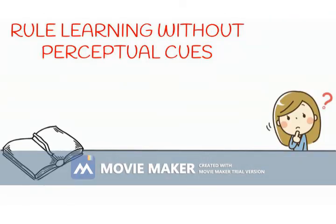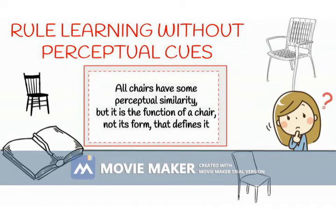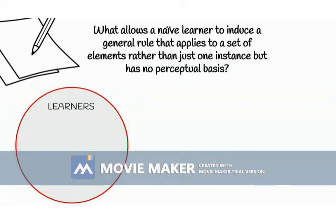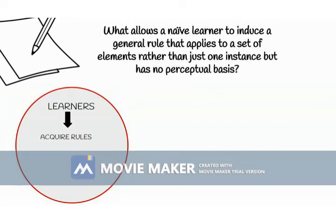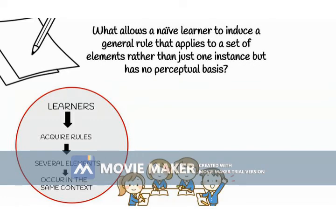Although perceptual cues can serve as powerful constraints on statistical learning, perceptual salience is not how most rules are defined in the natural environment. For example, all chairs have some perceptual similarity, but it is the function of the chair, not its form, that defines it. What allows a naive learner to induce a general rule that applies to a set of elements rather than just one instance but has no perceptual basis? One possibility is that learners are sensitive to contexts that signal this important distinction. They acquire rules when patterns in the input indicate that several elements occur interchangeably in the same context, but acquire specific instances when the patterns apply only to the individual elements.